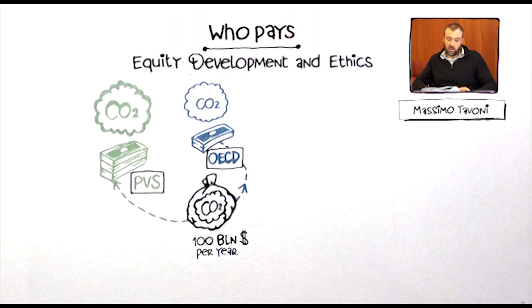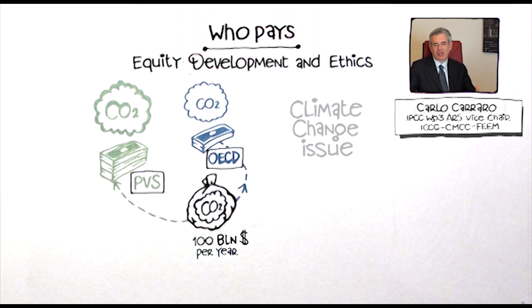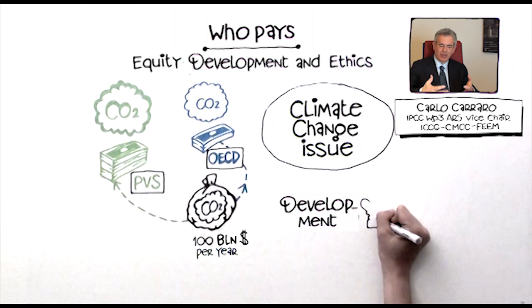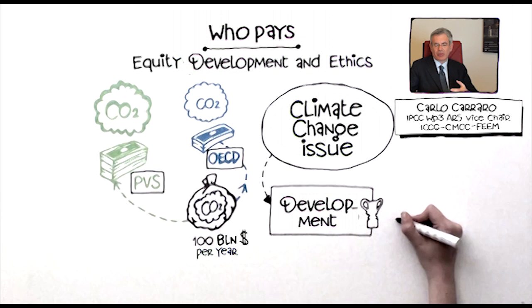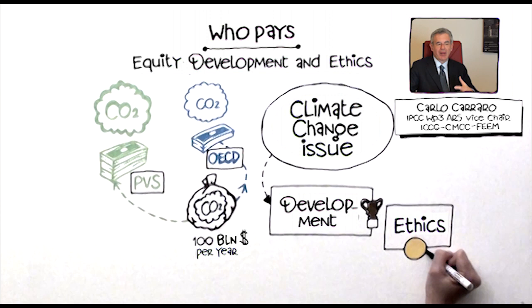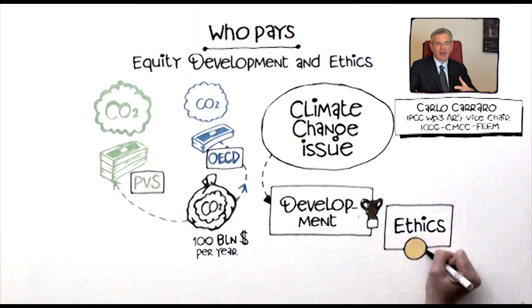Climate change is not an environmental problem, it's not an environmental issue, but it is an economic issue, a development issue. Therefore, if we want to deal with climate change, we also need to take care of poverty, of development needs in developing countries and of the ethical dimension of climate change, that is the responsibility that developed countries have with respect to the situation and future impacts of climate change in developing countries. What we need to decide in the future is not how to deal with climate change, but how to deal with economic development taking into account climate change.